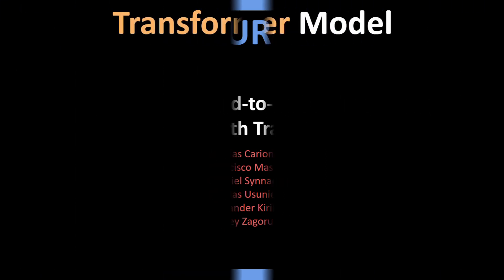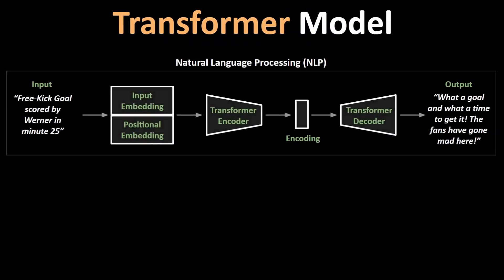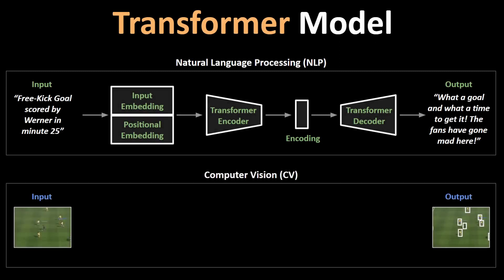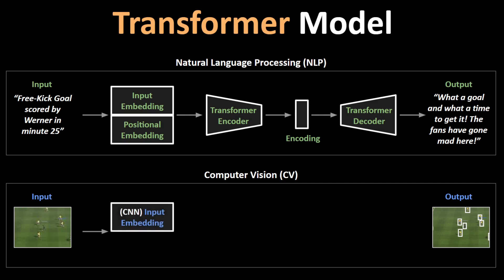Until now, transformers were mainly used for language modeling tasks, but this is the first time I am seeing them being used for computer vision. The basic idea is to simplify the object detection process in methods like RCNN by using transformers. The input image is converted to an embedding similar to techniques like word2vec in NLP. Also from NLP, the concept of positional embedding is used to retain spatial information.